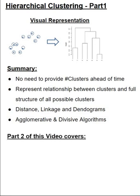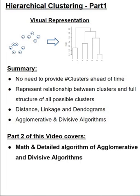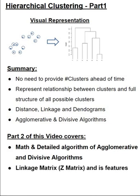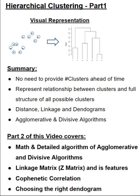In part two of this video, we cover the math and the detail algorithm of agglomerative and divisive algorithms. We also explore how link matrix, also called as the Z-matrix, is built on its features. We will look at cophenetic correlation, mathematics and properties. And finally, we will understand how to choose the right dendrogram quantitatively and the clustering algorithm for our data set.